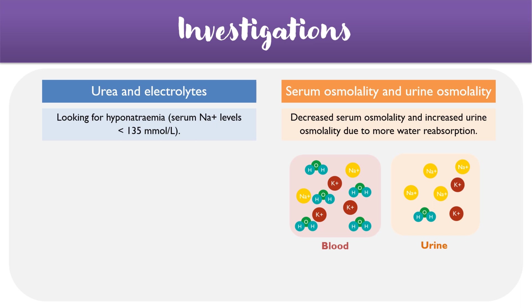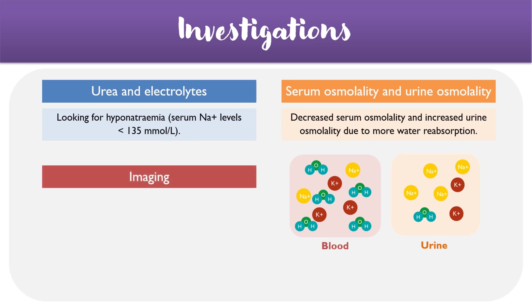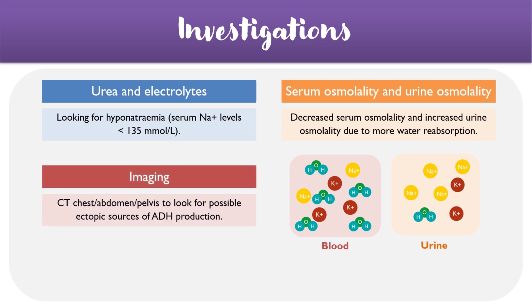Finally, we may want to consider some imaging, such as CT chest, abdomen to pelvis, to look for ectopic sources of ADH production, which can be seen in small cell lung cancer or other types of tumours.